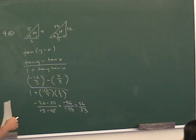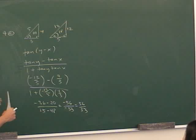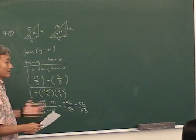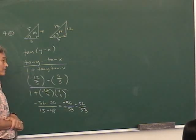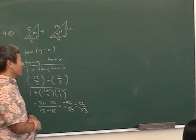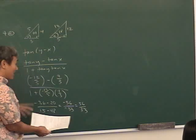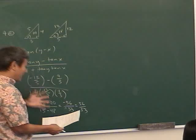If you distribute the tangent, that's the worst mistake you can make. That's what this test is all about — using identities.